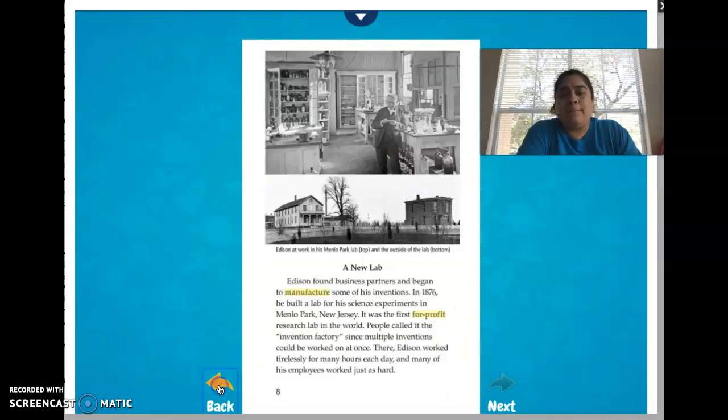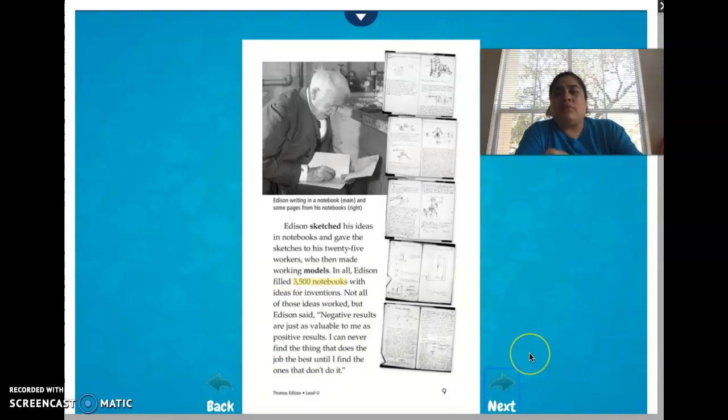So looking at just this section, A New Lab, I want you to think about what was it? Well let's think about all those inventions and how he had workers who worked with him. Why is it that Thomas Edison never gave up? Why is it that he was never told no?